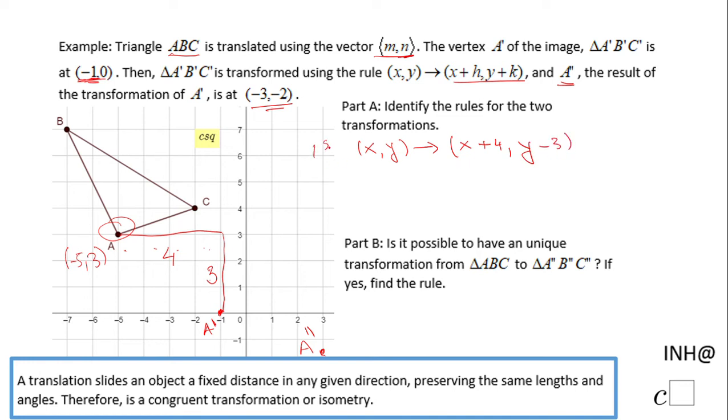The second transformation goes from this point A' to this point which they call A second. Again, this is (-1, 0) and this one is (-3, -2).